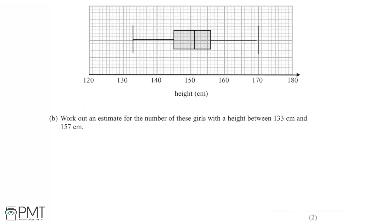I'm now asked to work out an estimate for the number of girls with a height between 133 centimeters and 157 centimeters. Referring back to the box plot, 133 centimeters is the lower bound — the shortest height — and 157 centimeters is at the upper quartile.